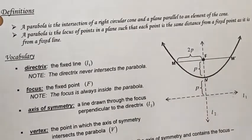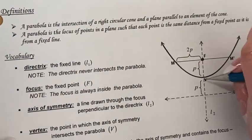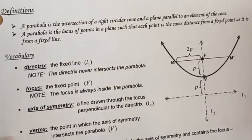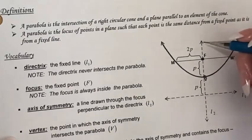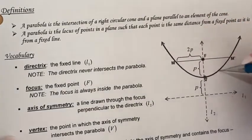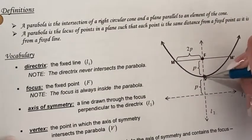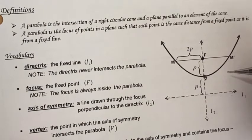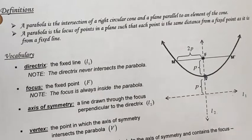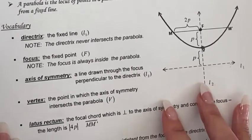The fourth key element is the vertex. The vertex is the point at which the axis of symmetry intersects the parabola. So your axis of symmetry and the actual parabola meet at the vertex, which we call V.